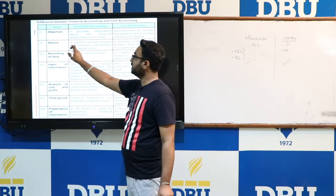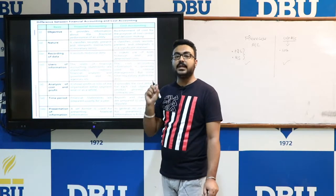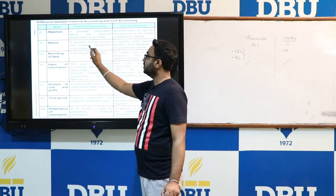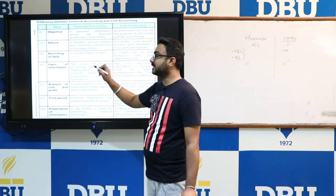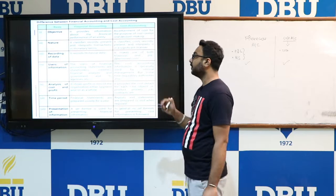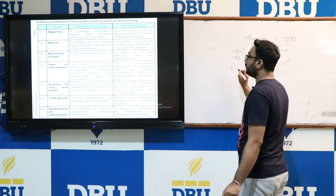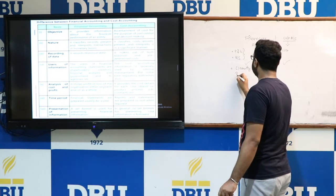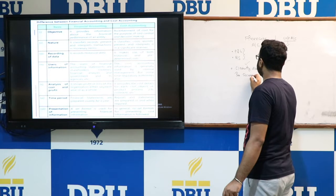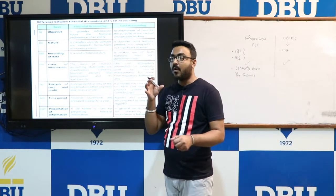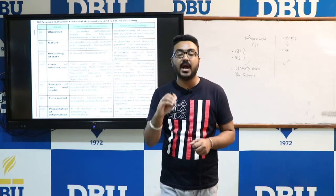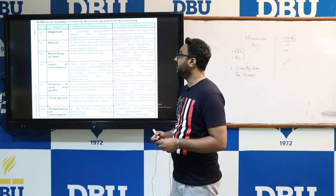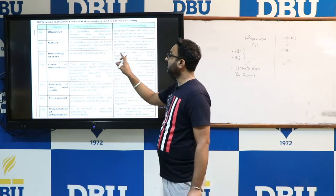The second main difference is nature. Financial accounting classifies, records, presents, and interprets transactions in monetary terms. Under financial accounting, we classify data and prepare various records of a particular concern — only monetary transactions are recorded in the books of accounts.